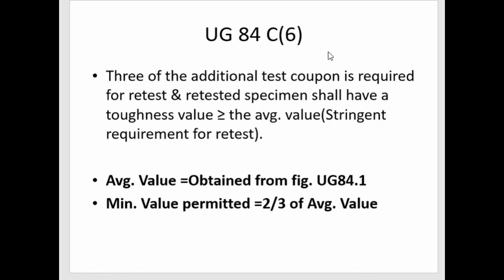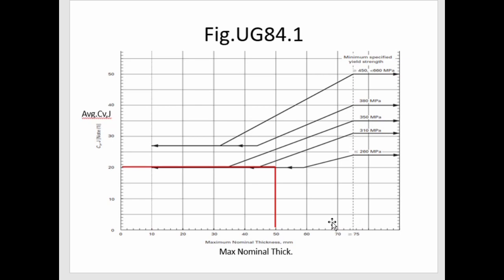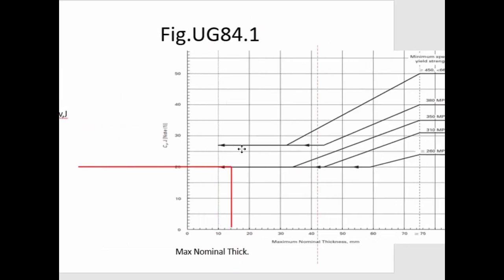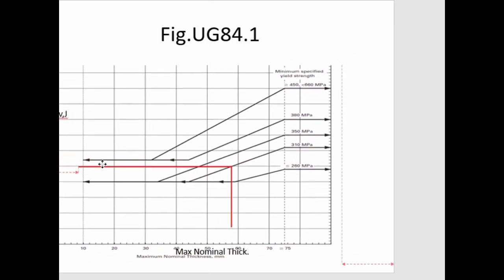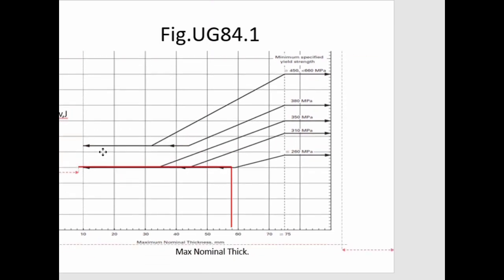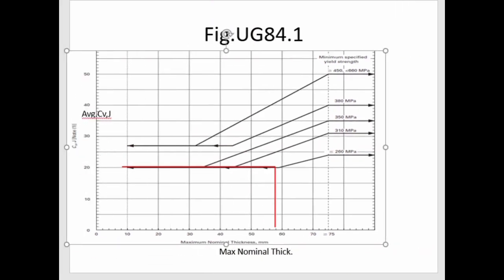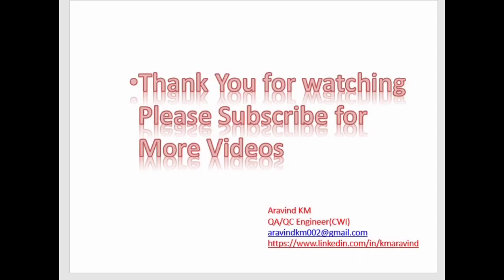In the retest, the toughness value of each of the three additional specimens shall be greater than or equal to the required average value — in our case, 20 joules. That means every individual retest specimen must meet or exceed the required average value of 20 J. This is what the code states.